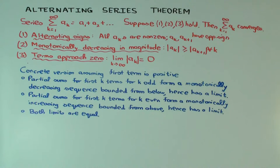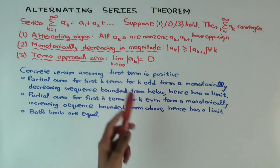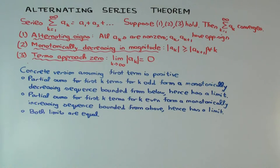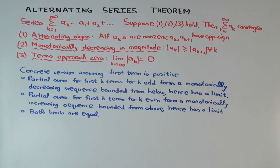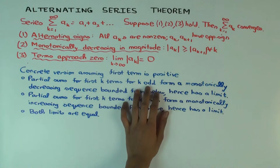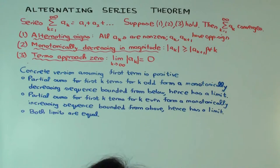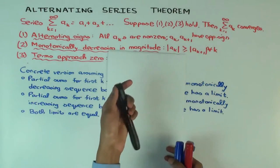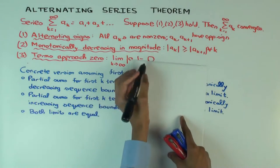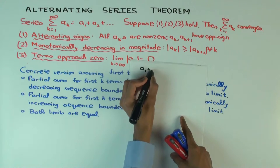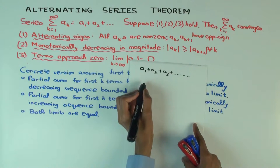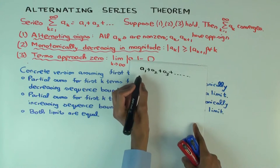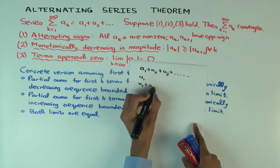In order to understand this theorem and the proof, I'm going to state a more concrete version. I'm going to assume that the first term is positive. So once the first term is positive, the second term is negative, then the third term is positive, the fourth term is negative, and so on — there's alternation of sign. Now I'm claiming that the odd partial sums form a particular kind of sequence.